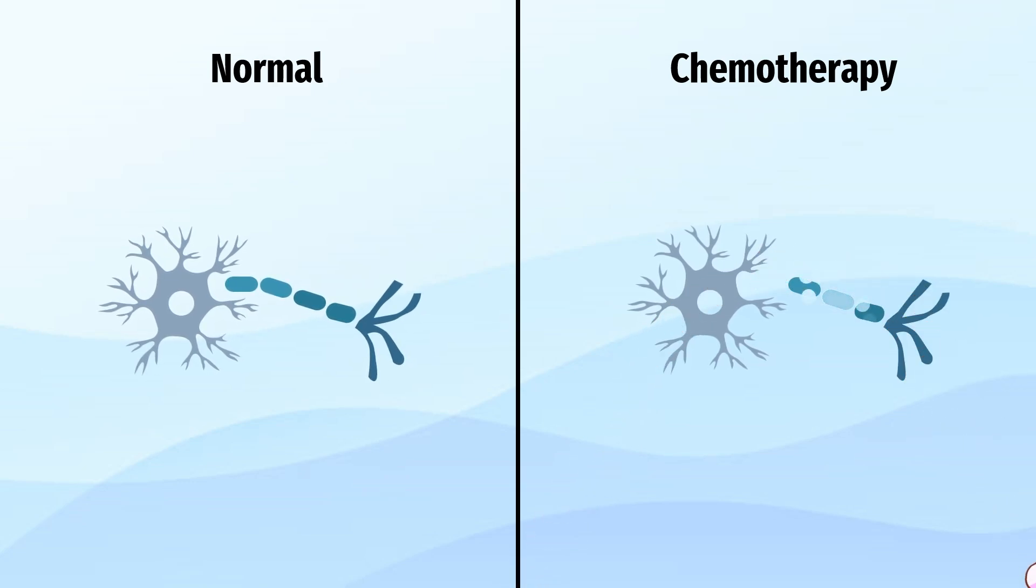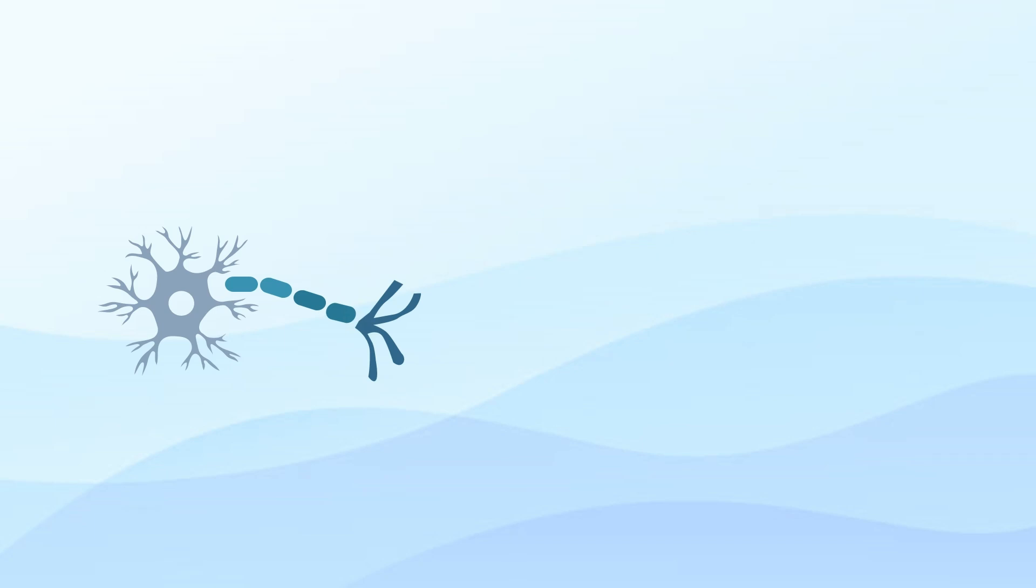Consequently, signals within the affected nerves travel at a slower pace, resulting in cognitive impairment and delayed information processing. Effective communication between neurons relies heavily on small molecules known as neurotransmitters.